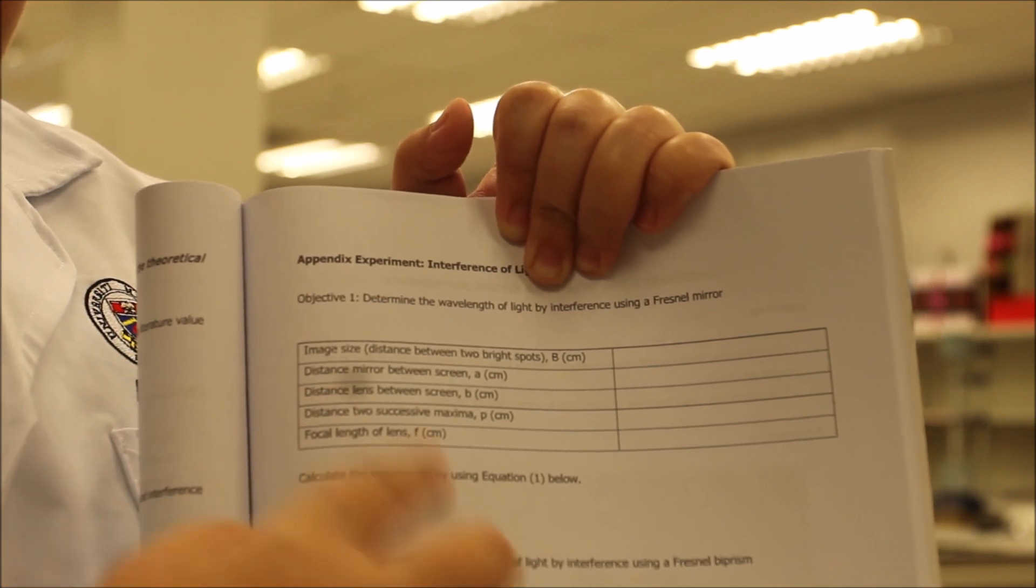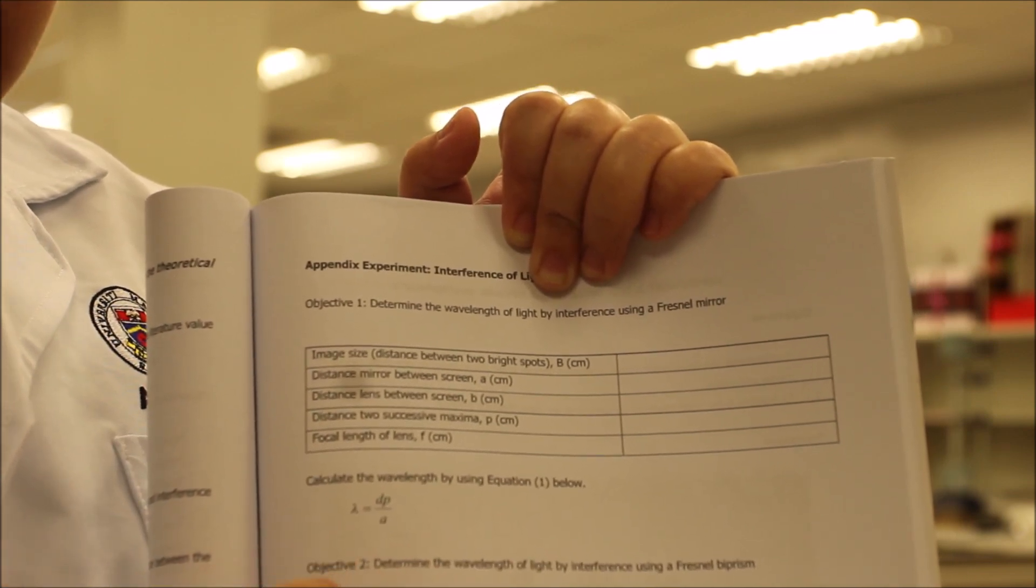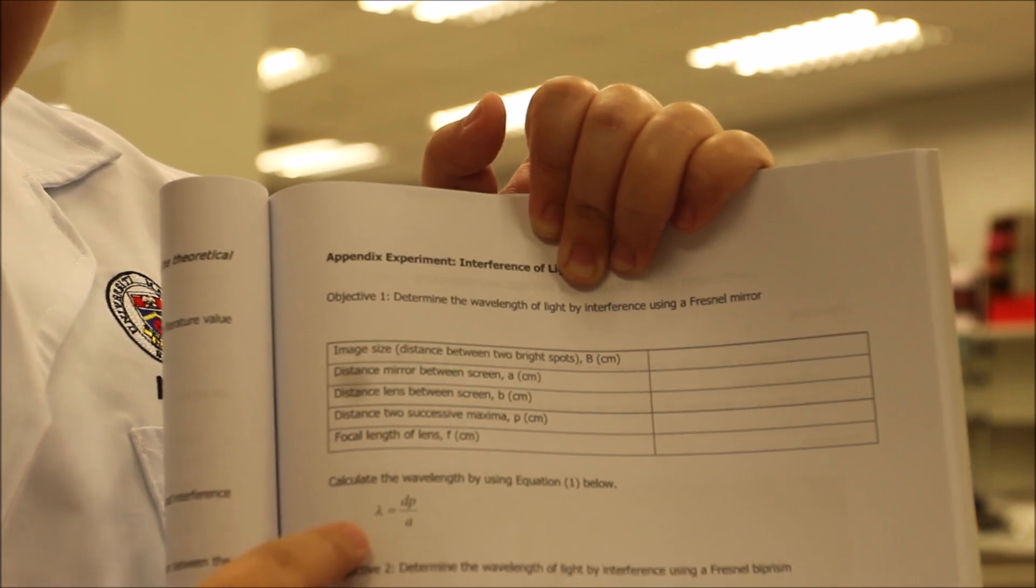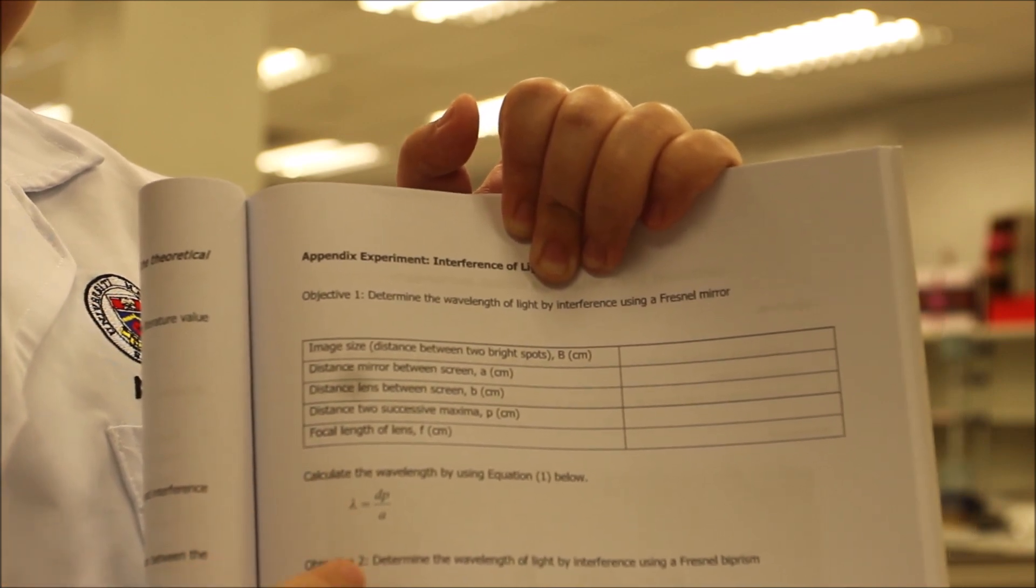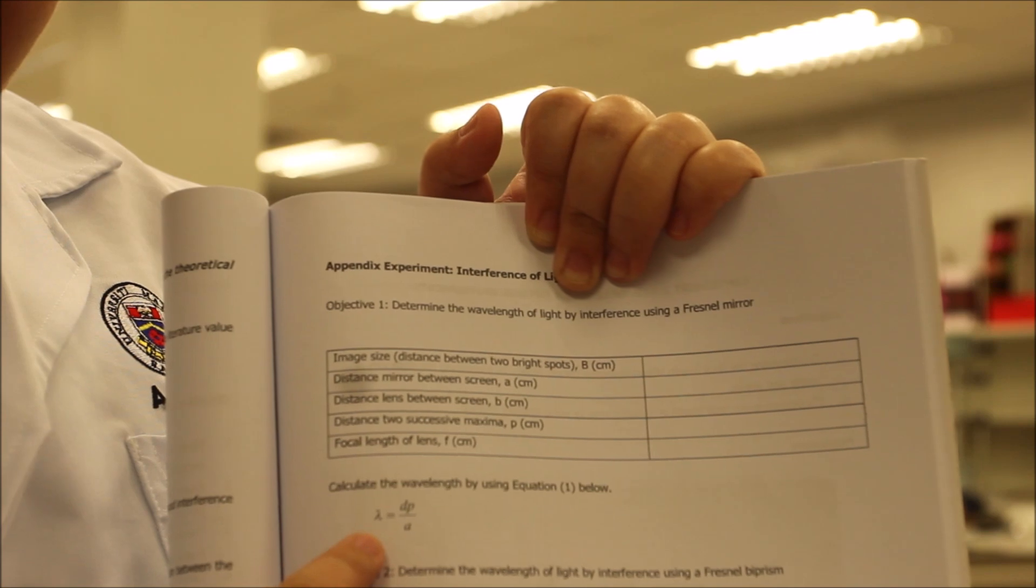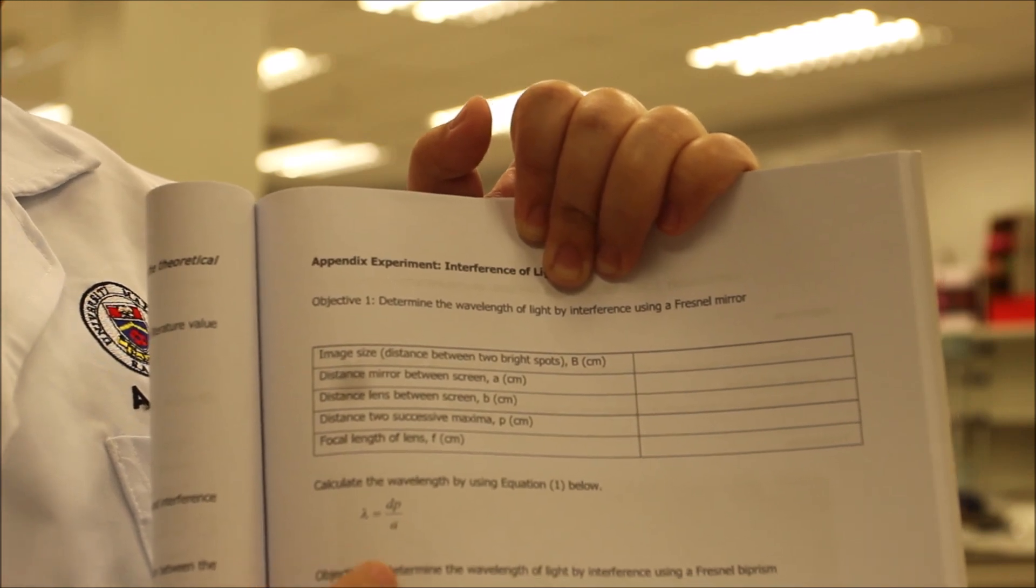After you have all the data that you need and you can calculate it, calculate the wavelength by using the formula of lambda equal to dp over a.